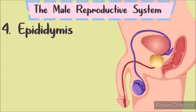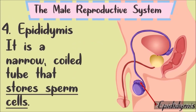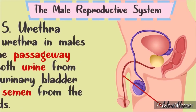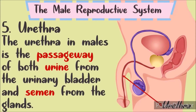Number 4: The Epididymis. It is a narrow coiled tube that stores sperm cells. It is located at the back of the testes. Number 5: The Urethra. In males, the urethra is the shared passageway for both urine from the urinary bladder and semen from the glands.